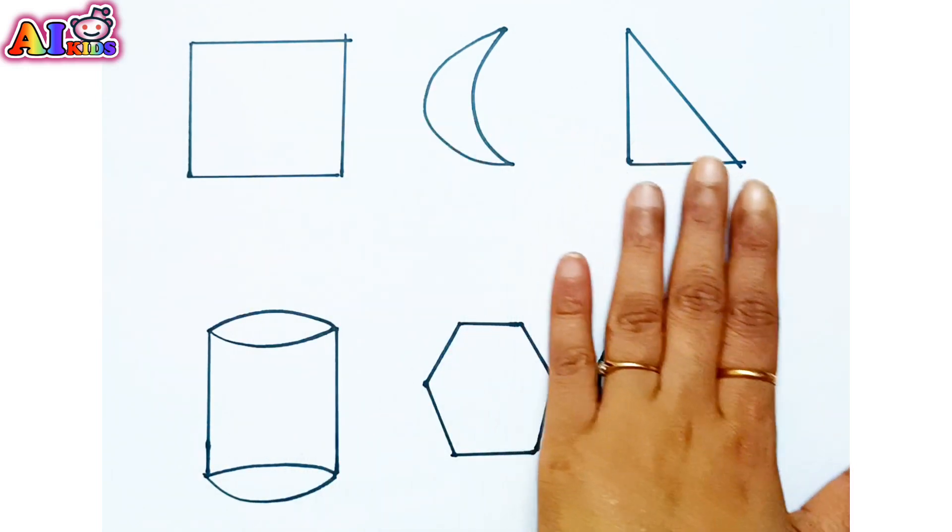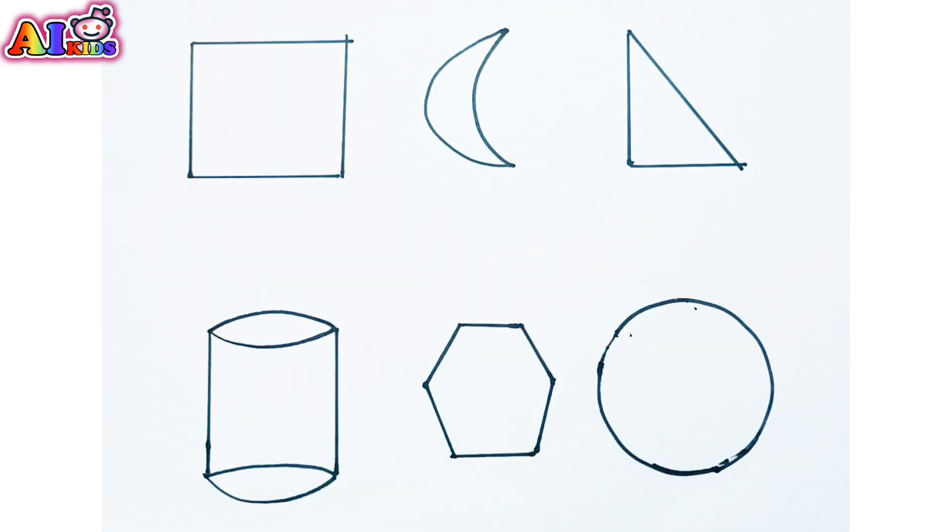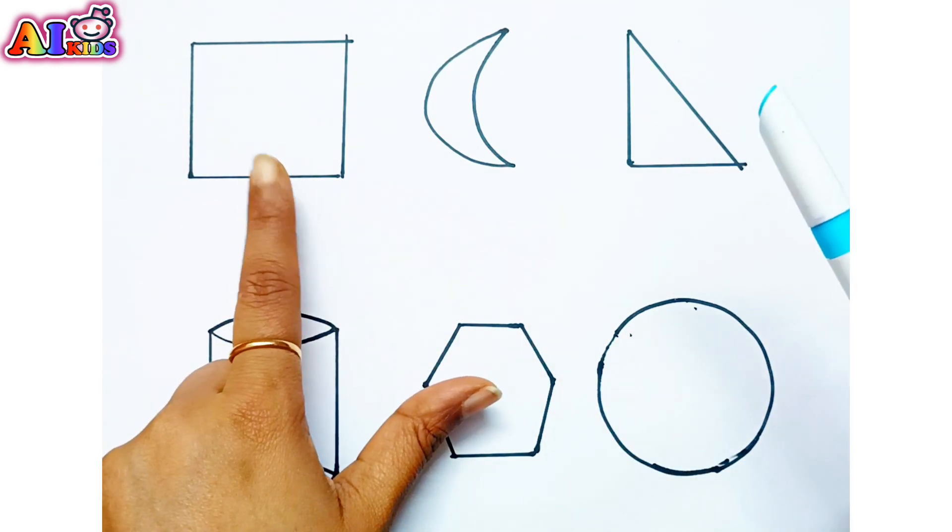Now let's put on the names of these shapes and also color them. The first shape is square.